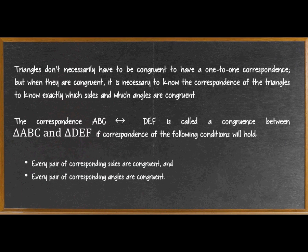The correspondence ABC and DEF is called a congruence between triangle ABC and triangle DEF if correspondence of the following conditions will hold. First is when every pair of corresponding sides are congruent, and when every pair of corresponding angles are congruent.